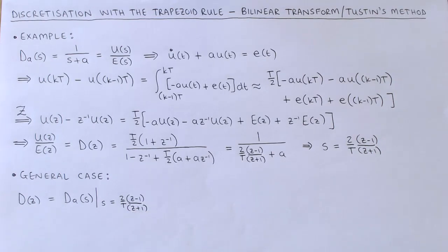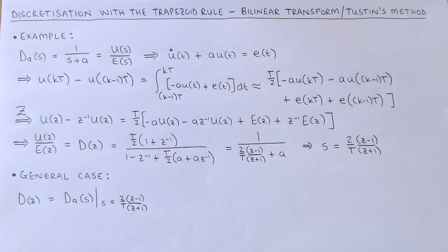The discretization methods using the forward rectangular rule, backward rectangular rule, and bilinear transform each define a mapping from s to z. We will look at the properties of these mappings at a later stage.